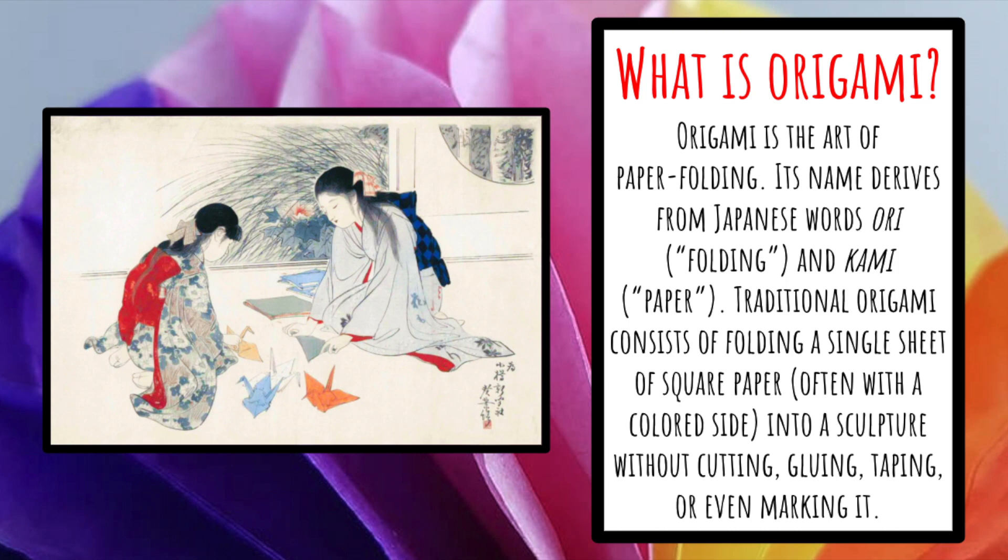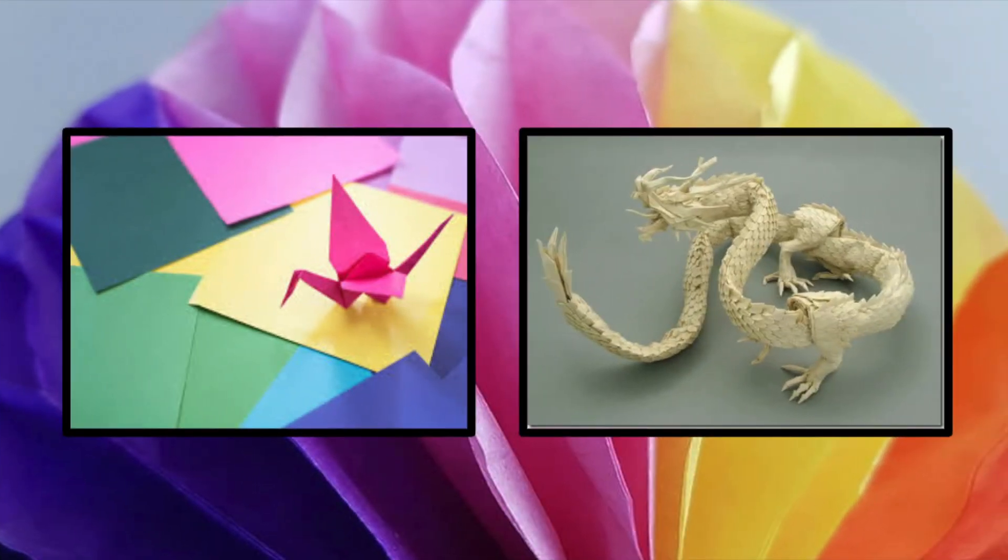Traditional origami consists of folding a single sheet of square paper, often with a colored side, into a sculpture without cutting, gluing, taping, or even marking it. There are lots of different types of origami, ranging from a simpler version to a more intricate and detailed version.